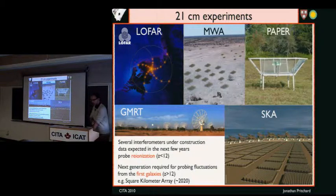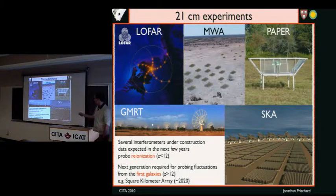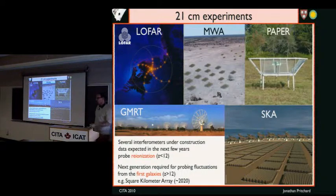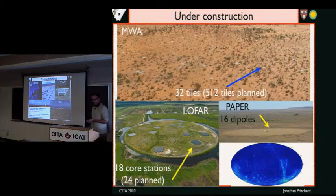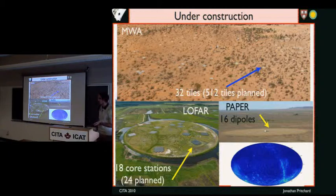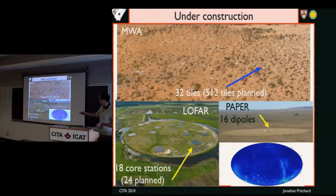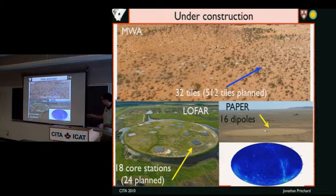All of these fluctuations are being targeted by experiments at the moment. There are a number of pathfinder experiments ranging from LOFAR in the Netherlands, the Murchison Widefield Array in Australia, PAPER which is being operated in South Africa, GMRT, and SKA which is planned for the future. These pathfinder instruments are really focused on reionization at redshifts around 12 or so. There are next-generation instruments that go after higher redshifts. MWA is about 32 tiles scattered in the Australian outback, and they plan to scale up to about 512 tiles over the next couple of years. LOFAR has about 18 core stations operating. They're all able to make maps of the sky, building up to the point of measuring fluctuations from the epoch of reionization.